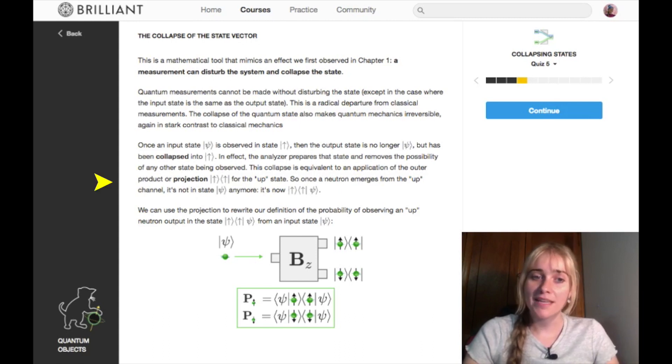Once a neutron emerges from the up channel, that means it was measured to be spin up. It's no longer in this input state anymore, it's now in the state represented by the up projection with the input state. This is now its collapsed state here. You can use that to rewrite our probabilities of observing an up neutron. So if our input state is psi, our collapsed output state of being measured up is this, then our probabilities are these inner products here.